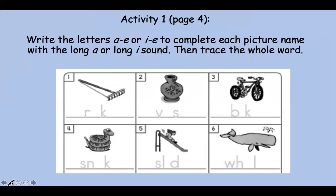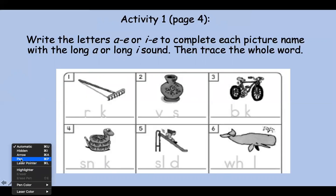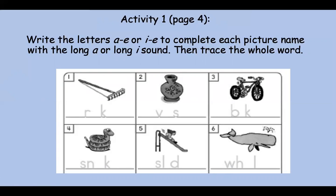Let's look at the first one. This is a picture of a rake. What do you hear in the middle there? Rake. Say it slowly. Do you hear it? Rake. Yep, it's the A. So we are going to write A, and then the consonant, and then we write that E that we do not hear. Rake.